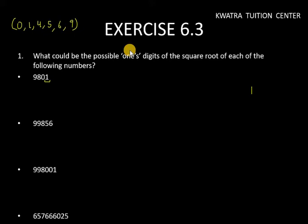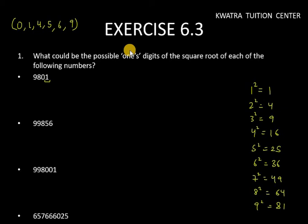First, let's write: 1 squared is 1, 2 squared is 4, 3 squared is 9, 4 squared is 16, 5 squared is 25, 6 squared is 36, 7 squared is 49, 8 squared is 64, 9 squared is 81, 10 squared is 100.